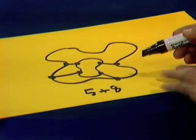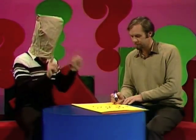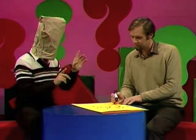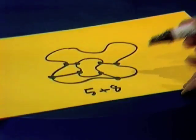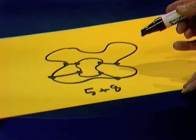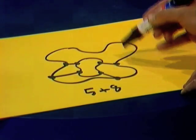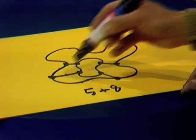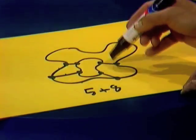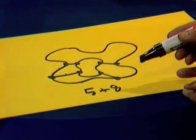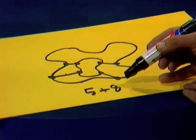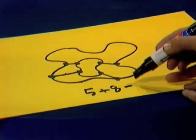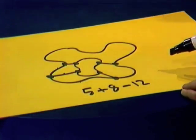Now count all the border lines that you have — that is, the lines between blobs, internal borders and external borders. One, two, three, four, five, six, seven, eight, nine, ten, eleven, twelve. Right. Now, in your little sum, take that number away. Done that.